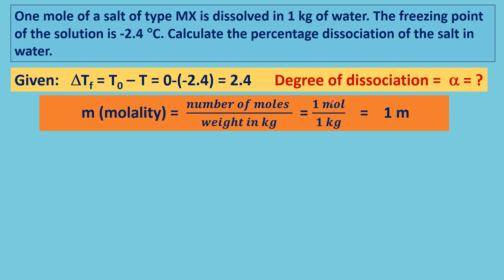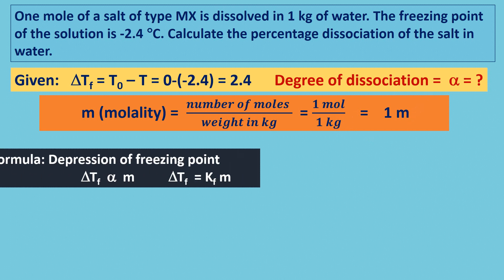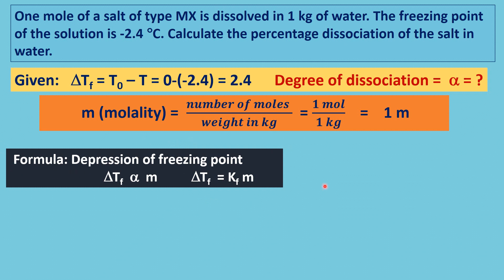In this case, a one molal solution is given. One mole of salt is dissolved in 1 kg of solvent, so molality equals number of moles divided by weight in 1 kg. Therefore, this is a 1 molal solution. The formula for depression of freezing point: delta Tf is directly proportional to the molality of the solution. If concentration is more, there will be more depression of freezing point.